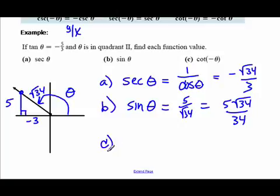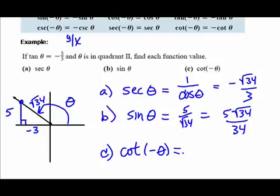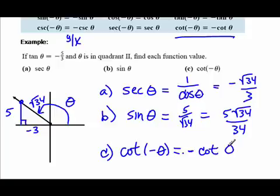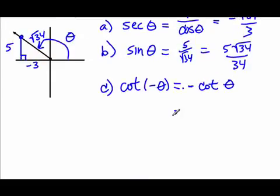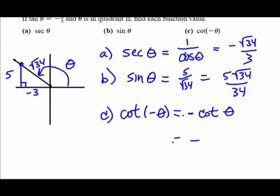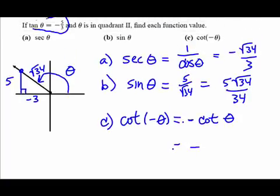Part C: find the cotangent of negative theta. According to the negative angle identity listed above, cotangent of negative theta equals the opposite of cotangent theta. And cotangent is the reciprocal of tangent. We're given that tangent is negative five-thirds, so we flip it and take its opposite: the result is simply positive three-fifths.